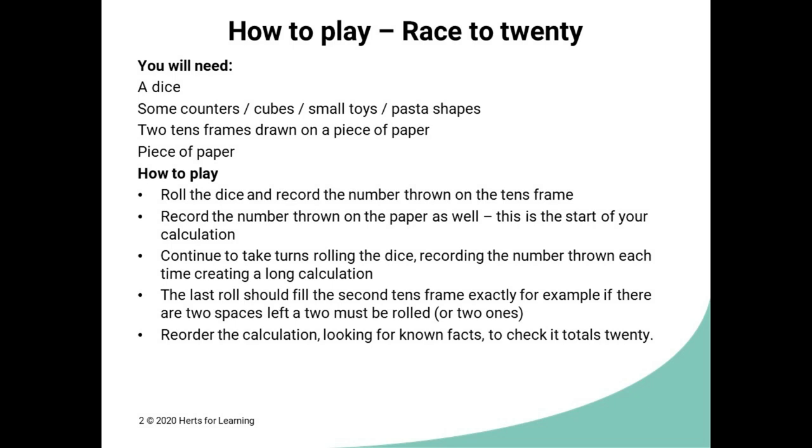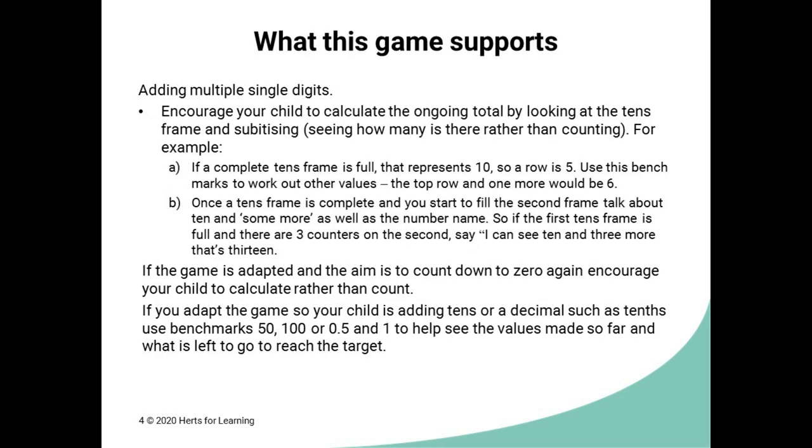Here's a recap of what you need and the rules to play the game. When playing this game the idea is that you encourage the children to see the total as they go along. The tens frames are really helpful for this. When the tens frame is full the children can instantly see that they've got ten. When the top row is full they know they've got five and so on. Using these benchmarks the children can recognise the other values. So for example if the top row is full and then there are two more the children will know that it's two more than five which is seven. This ability to see a value is called subitizing. It's really important to support children to become calculators rather than being over reliant on counting.